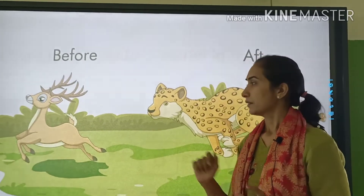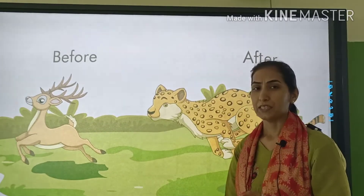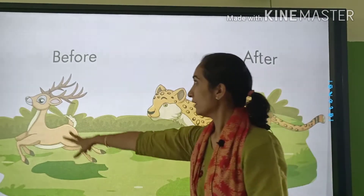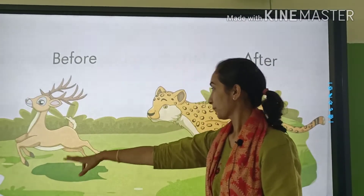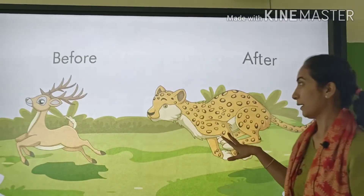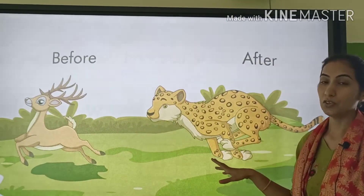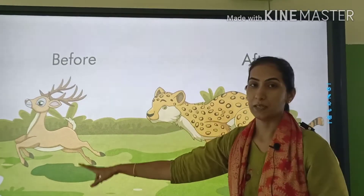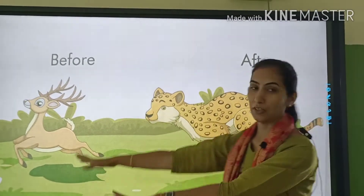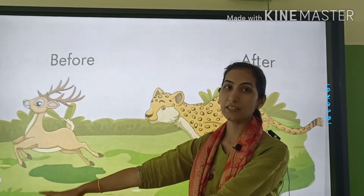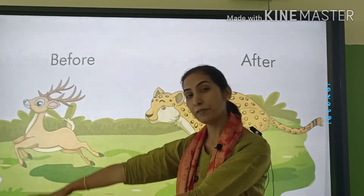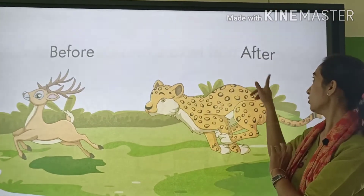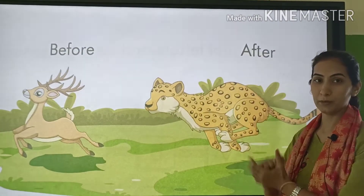Abhi dekhta hai — is picture mein bhi dekhta hai, jaise deer aagee hai aur leopard pichye. Jo aagee aata hai, isko 'before' bolte hain. Aur jo pichye hota hai, isko 'after' bolte hain.